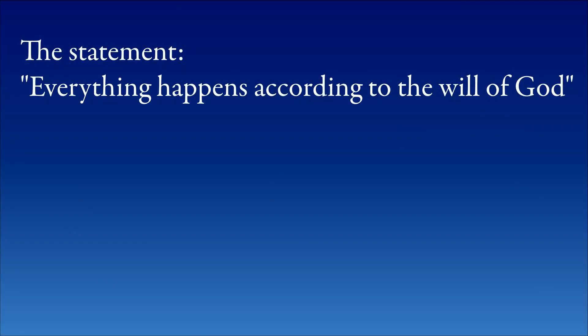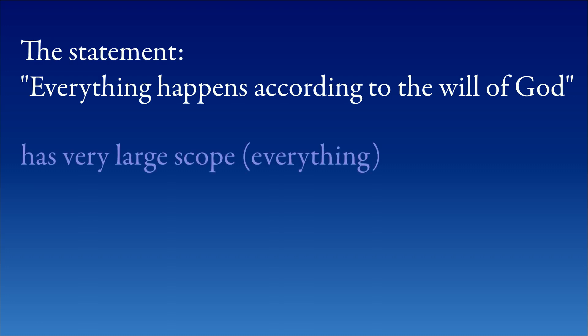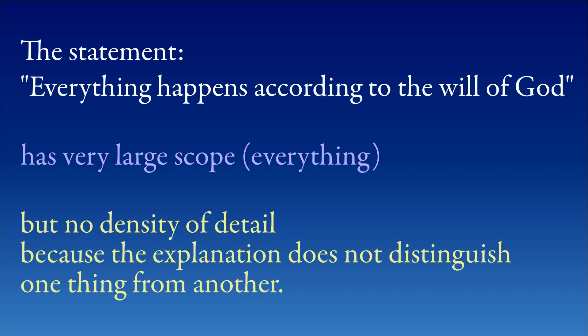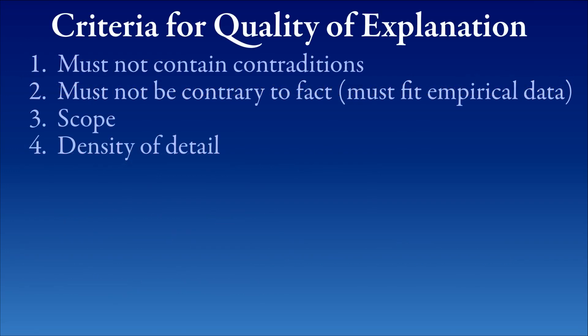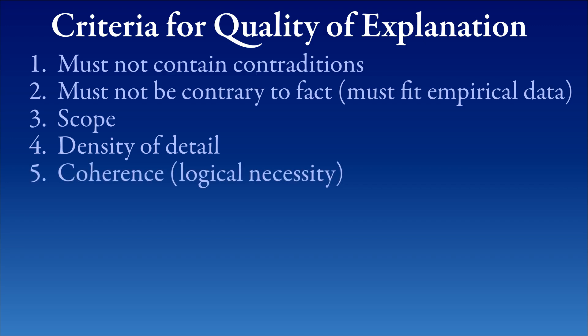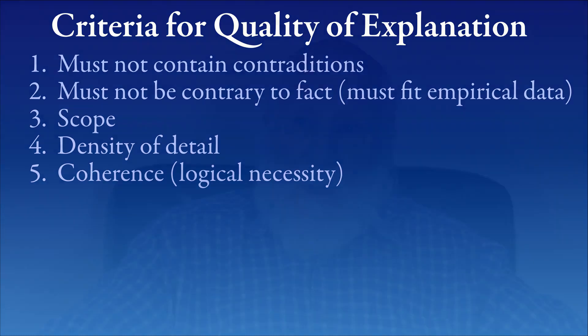One example of a very large scope is the explanation that everything happens as it does because it happens according to the will of God. Its scope is everything, but its density of detail is nothing — zero — because you can't distinguish one thing from another in terms of the explanation. Another criterion of explanation is coherence. Coherence means how much logical necessity is there in the explanation. The more logical necessity contained in the explanation, the more coherent it is, and the more coherent it is, the better it is.